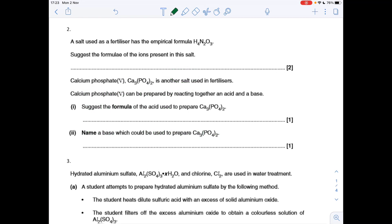Question two: suggest the formula of the ions present in this salt. A salt's got to either contain a metal ion or an ammonium ion. There's no metal ion in this, so it's going to be the ammonium ion, NH4+. The remaining atoms give us the nitrate ion, NO3-.